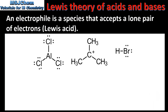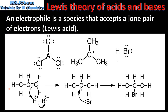Next we look at electrophiles and nucleophiles. Electrophiles are electron deficient species that accept lone pairs of electrons, therefore acting as Lewis acids. Here we have 3 examples of electrophiles. From left to right we have aluminium chloride, a carbocation, and hydrogen bromide. Here we have an example of a reaction where hydrogen bromide is acting as an electrophile. In the reaction an alkene, which is an unsaturated hydrocarbon, is converted to a halogeno alkane. This reaction will be covered in more detail in topic 20.